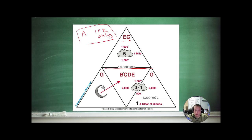1,000, 3,152, 3,000 feet visibility, 1,000 above, 500 below, and 2,000 feet horizontal. Bravo is the exception. Bravo only requires you to remain clear of clouds. So three miles, clear of clouds.